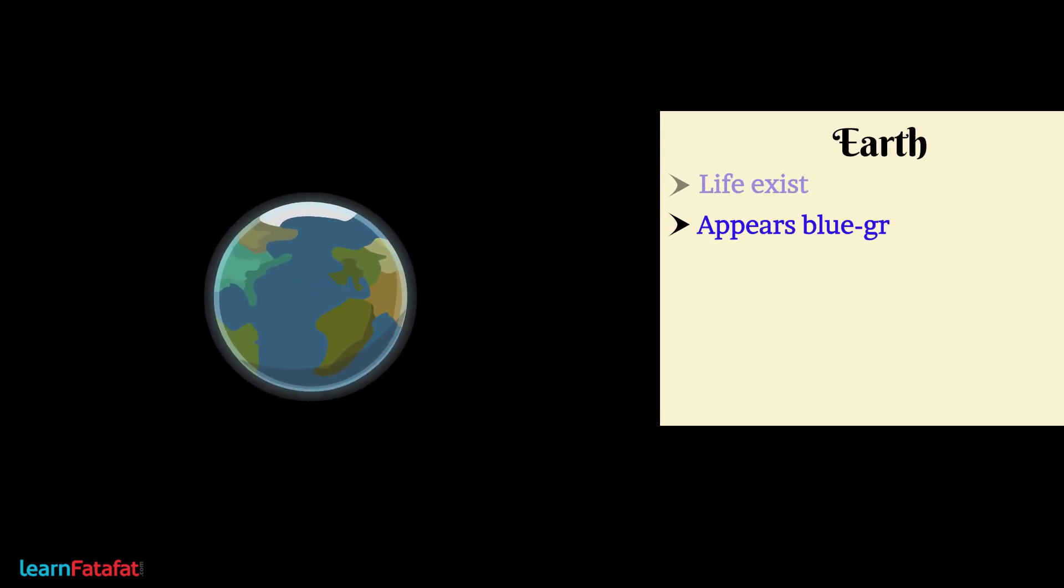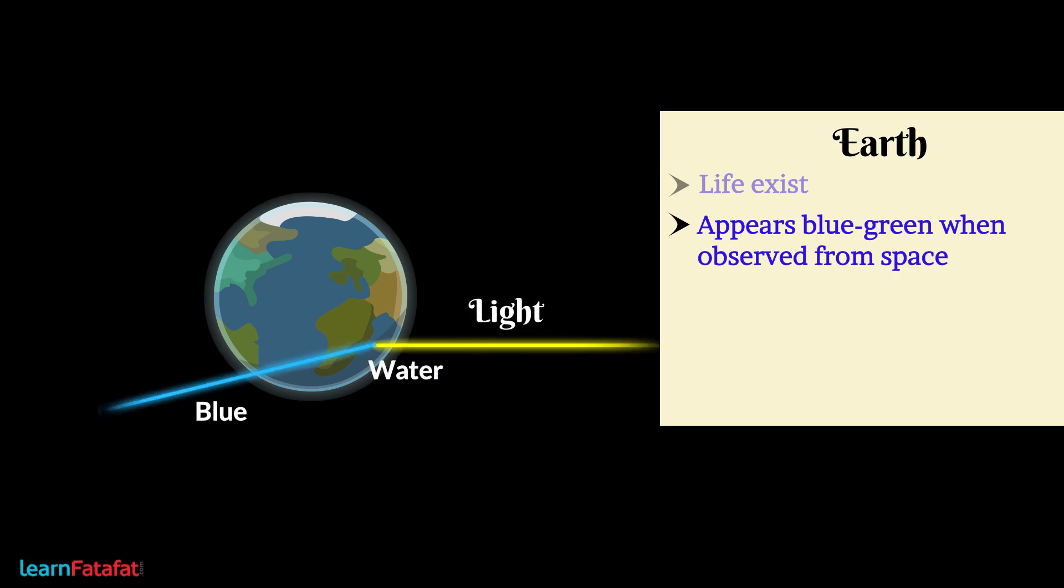Earth appears blue-green when observed from space. This is because light reflected from water is blue and light reflected from the ground is green.